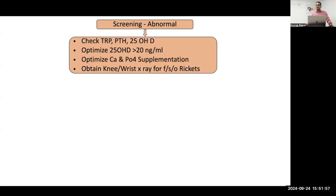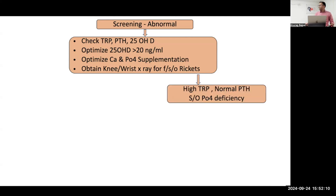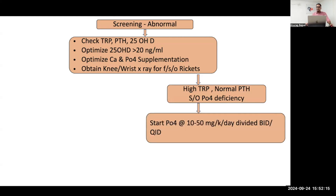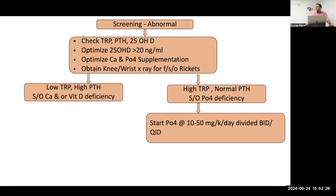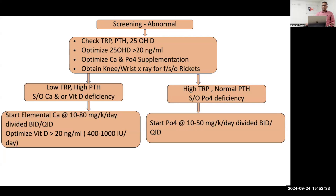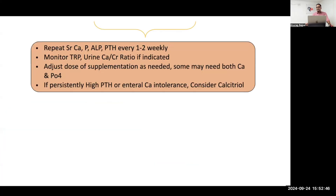If screening is abnormal, check TRP, PTH, and vitamin D, and optimize vitamin D levels to more than 20. Continue calcium and phosphorus supplementation. If TRP is high and PTH is normal — suggestive of phosphorus deficiency — introduce phosphorus at 10 to 50 mg per kg per day in two to four divided doses. If TRP is low and PTH is high — suggestive of calcium deficiency — add calcium at 10 to 80 mg per kg per day in two to four divided doses, and optimize vitamin D. Repeat investigations every one to two weeks, monitor TRP and urine calcium-creatinine ratio, and adjust therapeutic doses. Both calcium and phosphorus can be given simultaneously if needed.